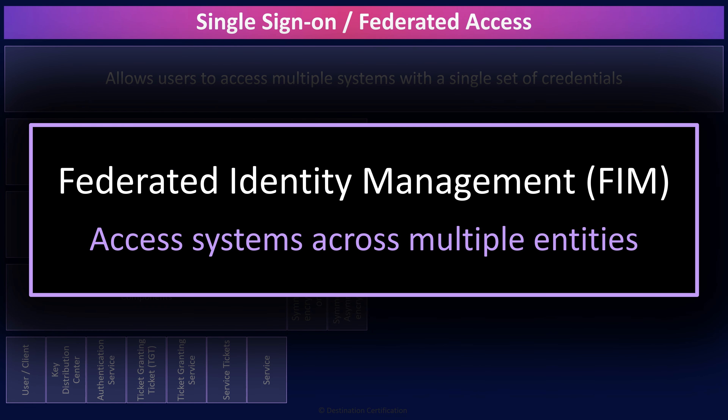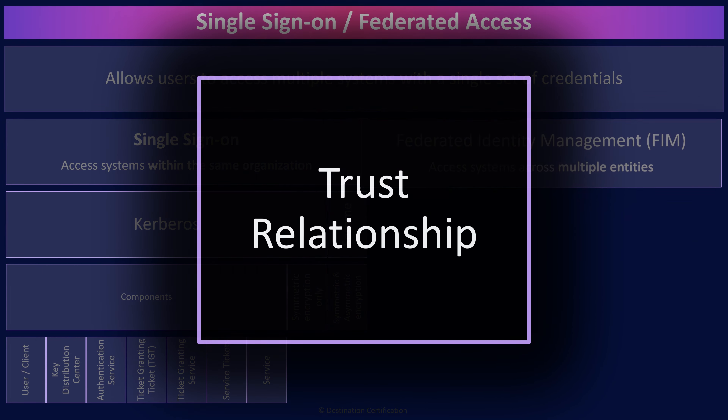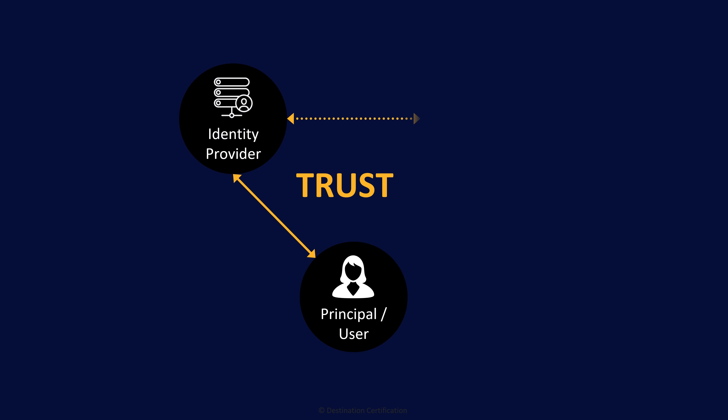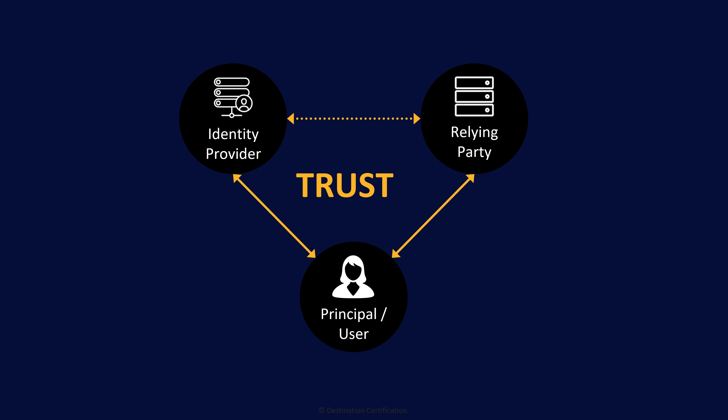Now let's talk about federated access. From a user's perspective, it looks exactly like single sign-on — the user enters one set of credentials and then they magically get access to a bunch of different applications. The key difference is that in federated access, users can access not just internal applications but also externally managed applications — think access to a SaaS application in the cloud. Federated access relies on a trust relationship between three different entities: the user, the identity provider, and the service provider. The service provider needs to trust the authentication being performed by the identity provider in order to authorize the user to access the service.